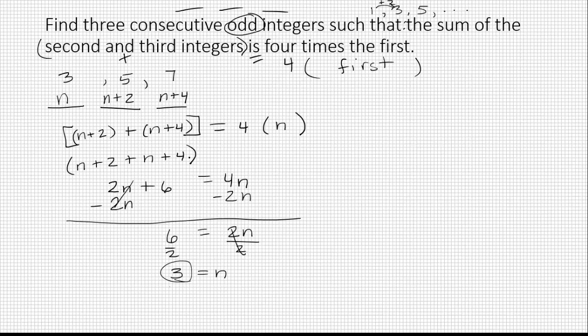Let's check this one. The sum of the second and third, okay, that would be five plus seven, should be equal to four times the first. And that is true. So that gives you a strategy for solving problems that have consecutive odd or even numbers in them. Good luck!